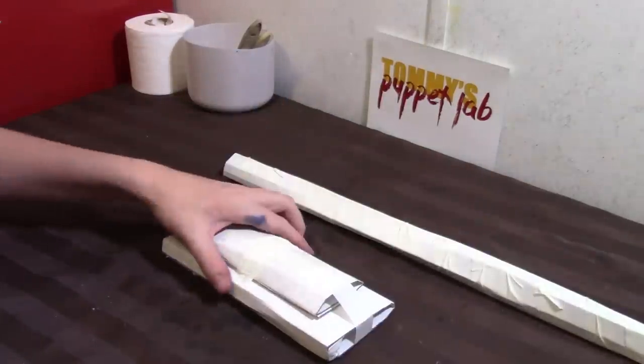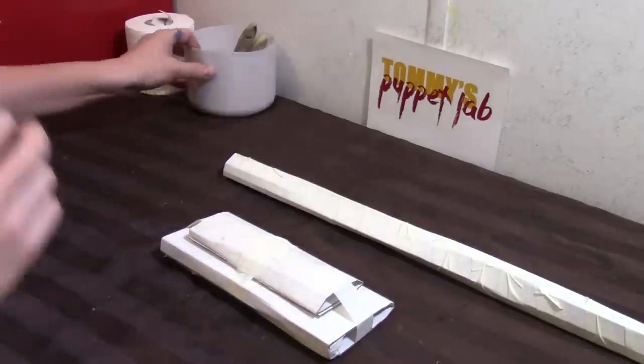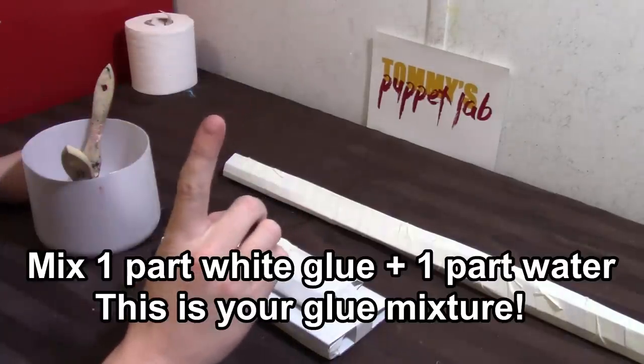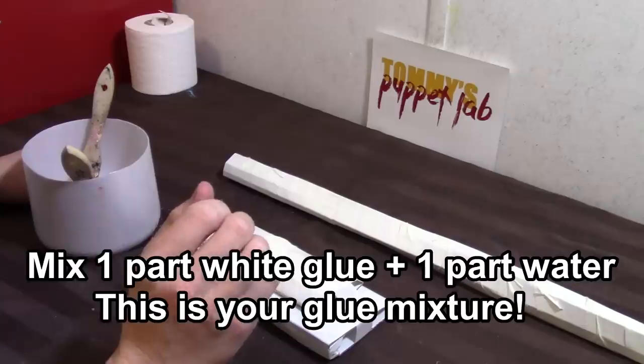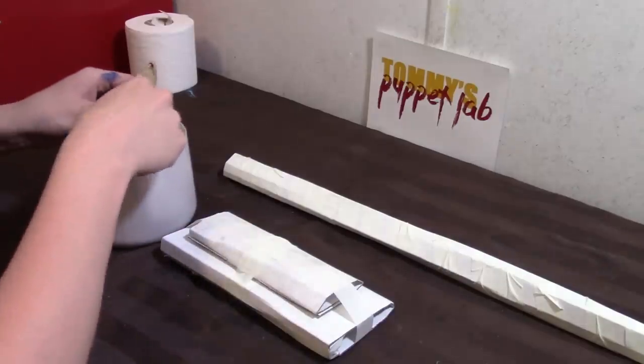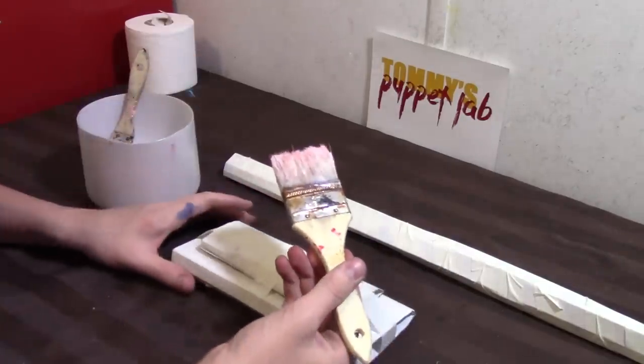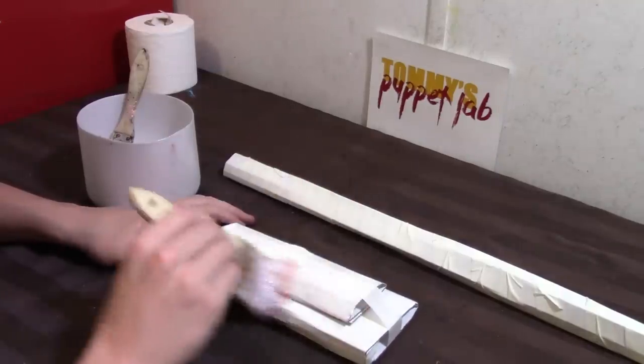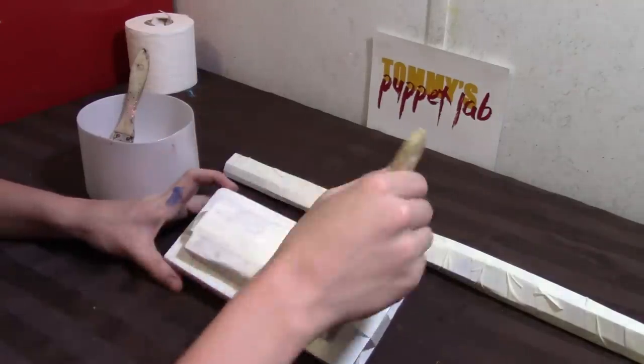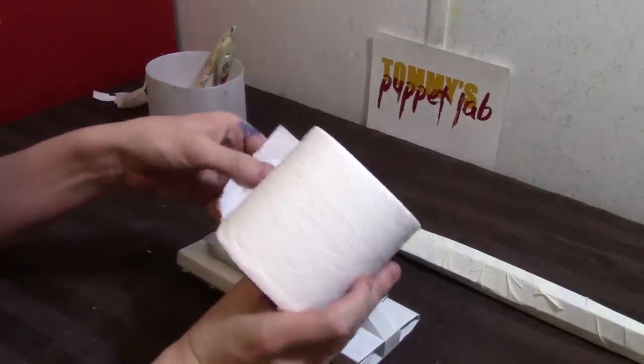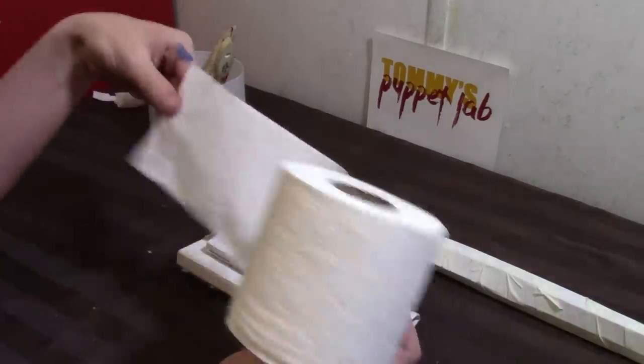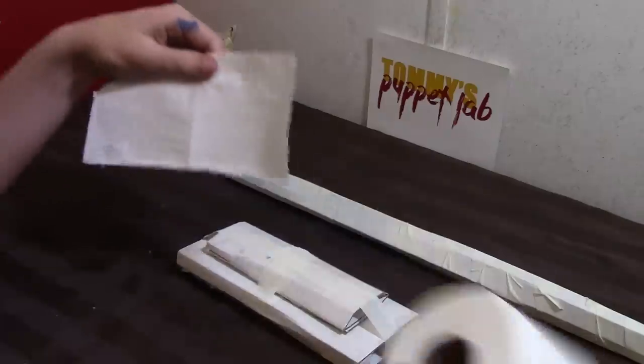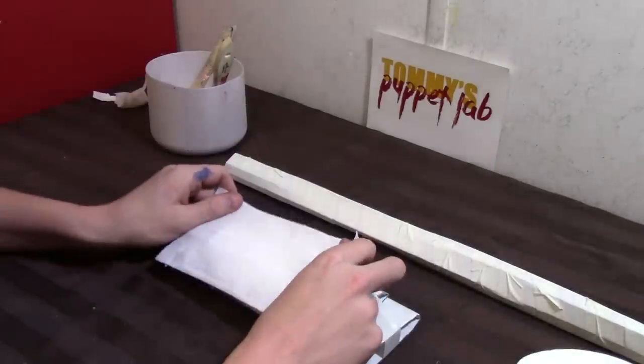Now the next thing we need to do is we need to cover this in paper mache. So you'll need to mix one part glue, one part water. And I use white glue. Okay, I've already done that. So we're going to take a paint brush and we're going to brush on the surface area. Now you're going to take some tissue paper or toilet paper. I use toilet paper because it's cheap and it works really well. And you're going to cover the wet surface area.